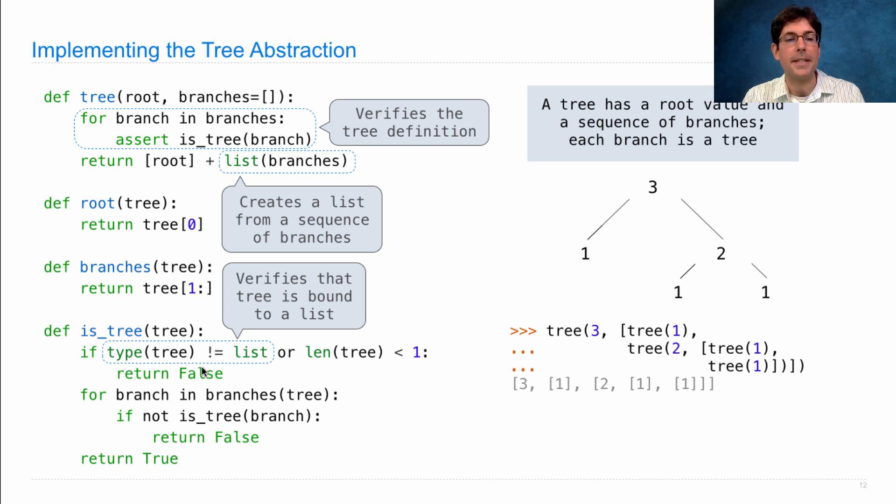You may not have seen this syntax before. Type is a built-in function that returns what sort of thing tree is bound to. In this case, it's a list. And then you can check and see if that type is the same as the list type or not. Finally, we have a function that checks whether something is a leaf. It's a leaf if it doesn't have any branches.